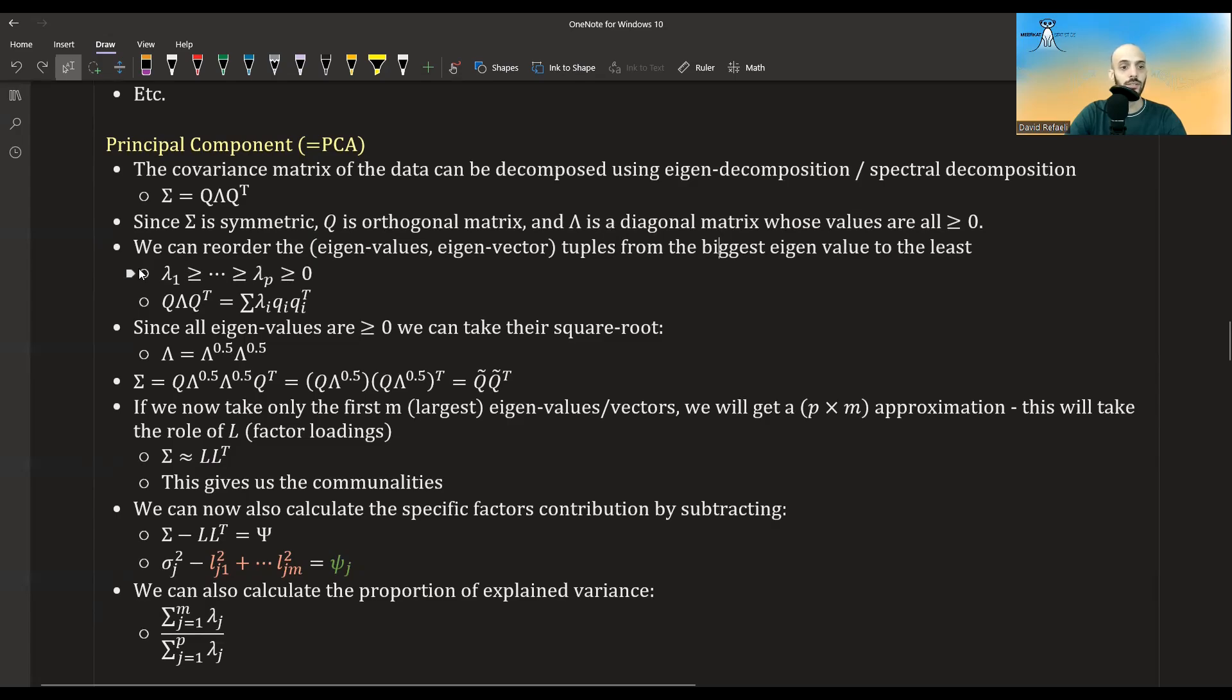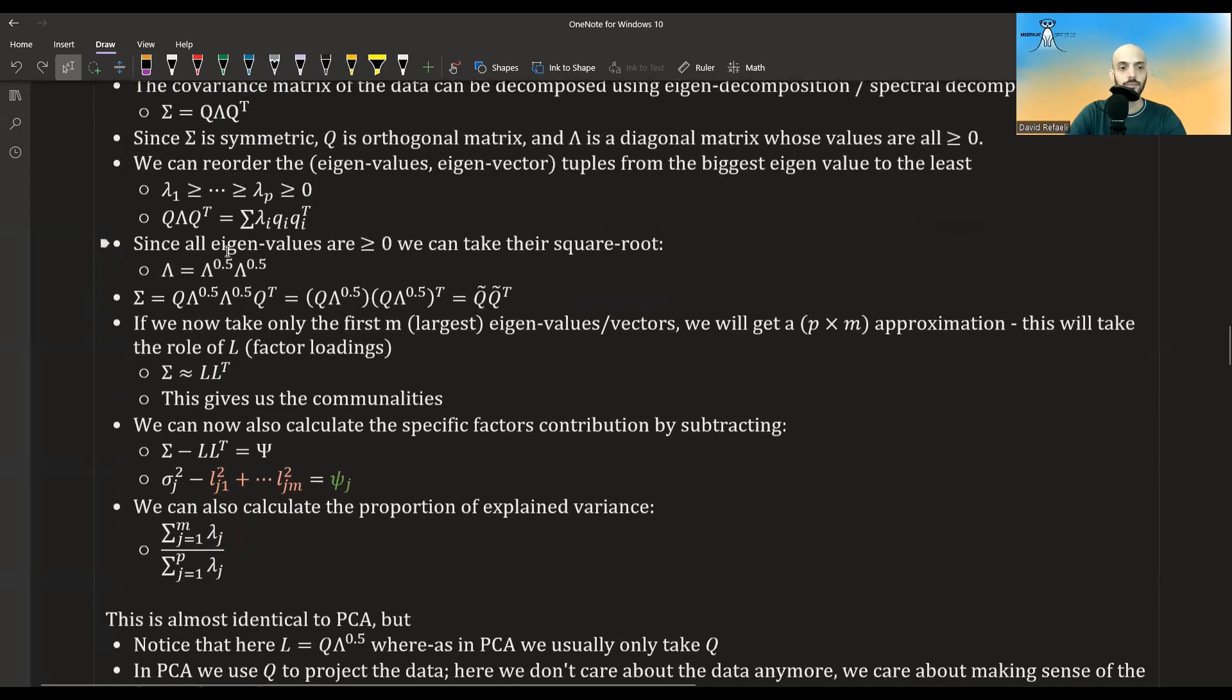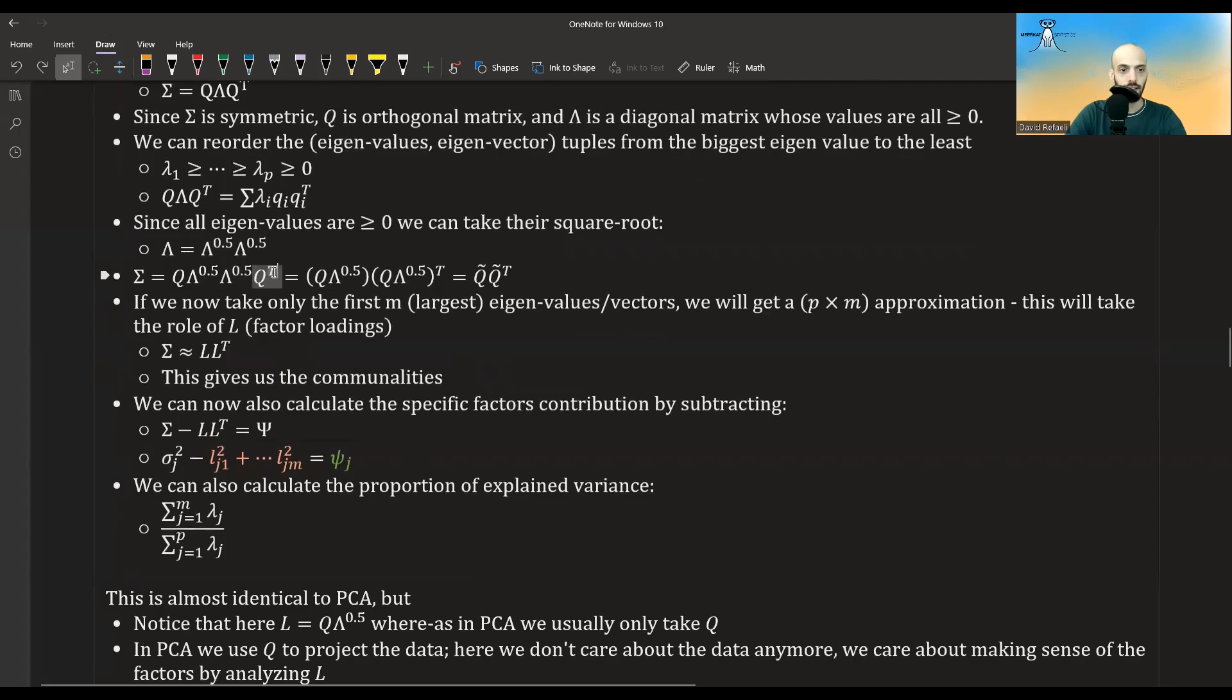We can arrange them from the bigger to the smaller one. Because they are all greater than zero, we can decompose this diagonal matrix into the multiplication of the square root of the diagonal matrix twice. Then we can do this and separate this and this. Notice that this is a diagonal matrix, so the transpose is equal to itself. And now we can write this covariance matrix as Q tilde times Q tilde transpose, where Q tilde is the Q times the square root of the diagonal matrix.